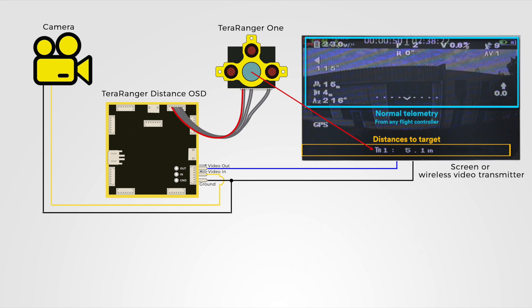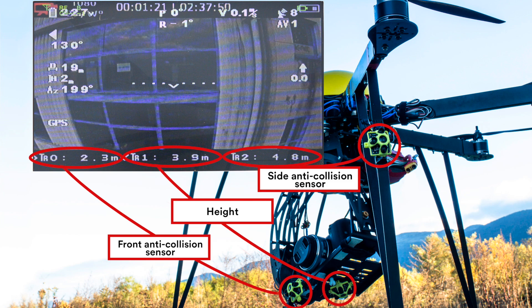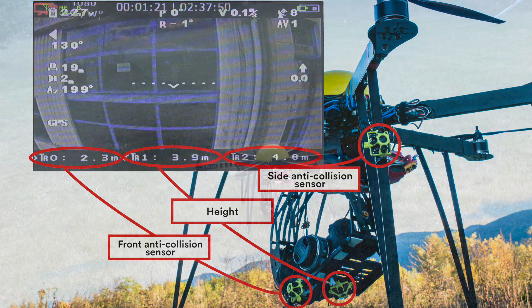For this flight demonstration we have mounted three Terraranger 1 sensors. TR0 is pointing forwards for front anti-collision, TR1 is monitoring the relative altitude, and TR2 is placed on the right side of the drone.